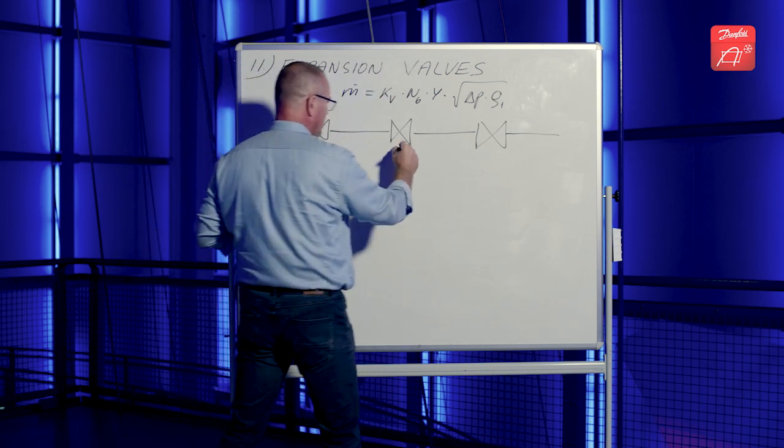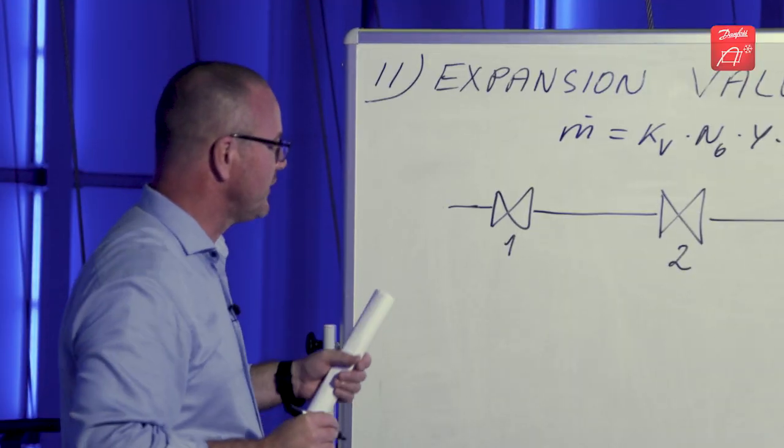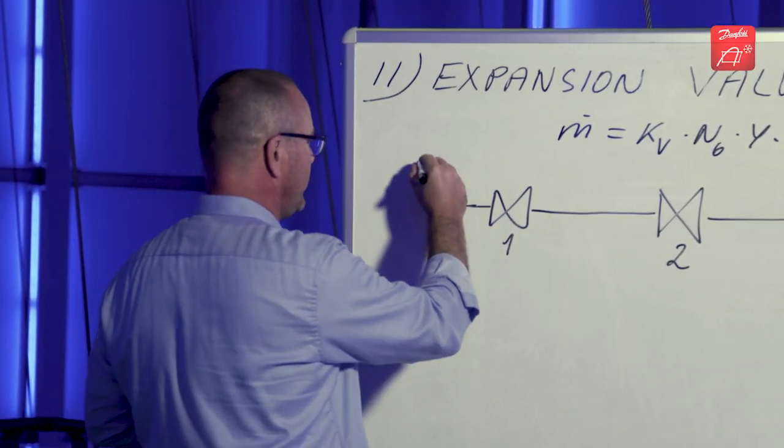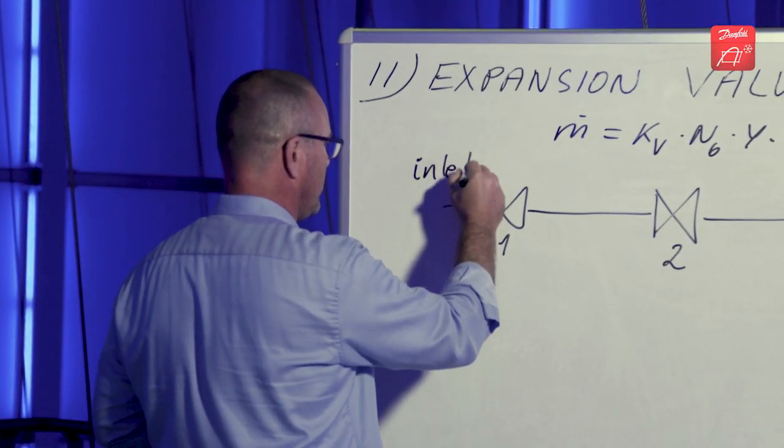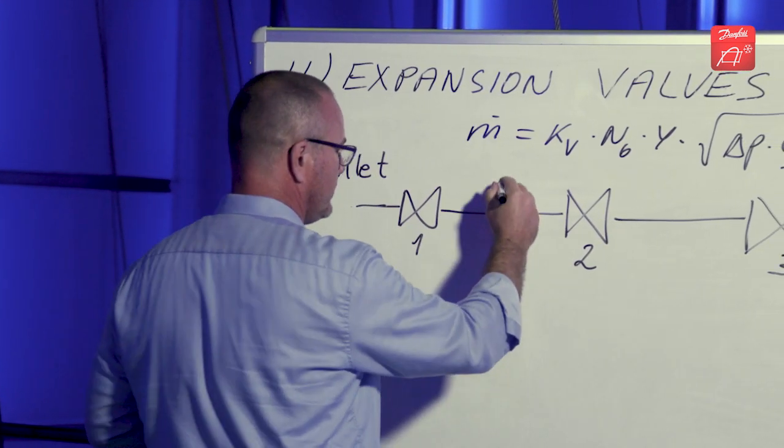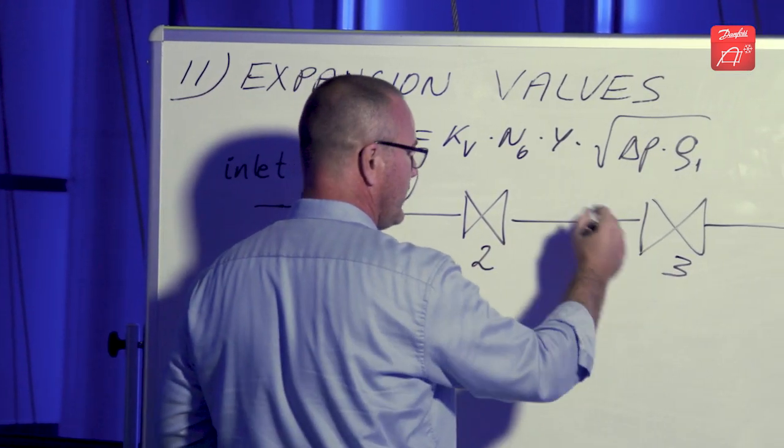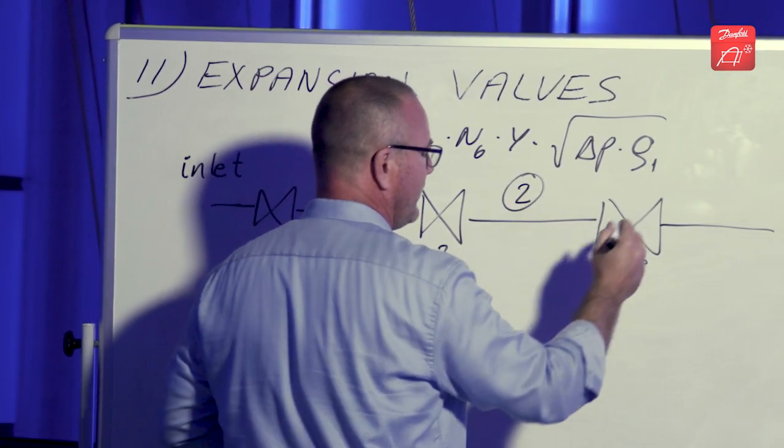And let's call this valve one, two, three. So for these three valves, we start at the inlet. We go in between valve one and two, call this point one. Between valve two and three, point two. And then we have the outlet.